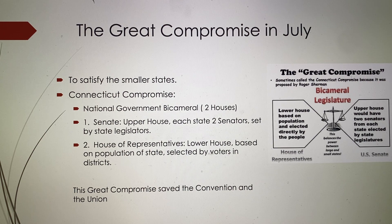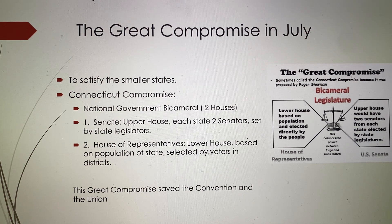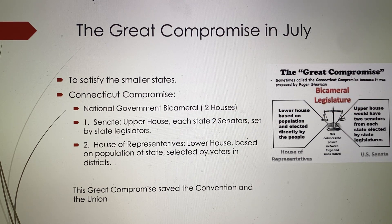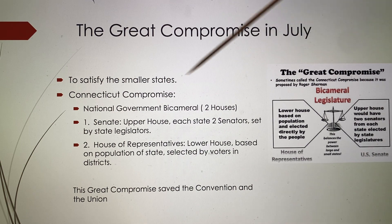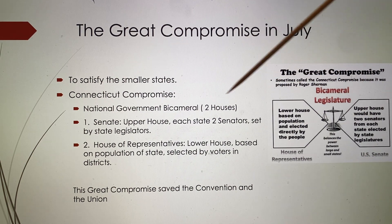The first house would be the Senate, with two senators from each state — not going by population. Every state would send two senators, and that would be the upper house. The lower house would be called the House of Representatives, based on the population of each state. Voters would go into their district and vote for their representatives from that district. This bicameral legislature — called Congress — would be responsible for making laws.